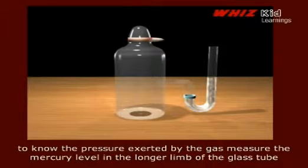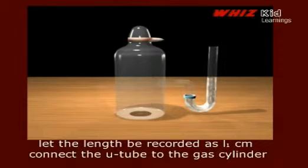To know the pressure exerted by the gas, measure the mercury level in the longer limb of the glass tube. Let the length be recorded as L1 cm.